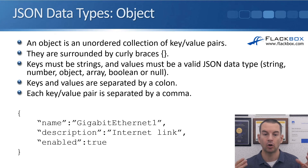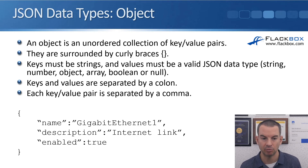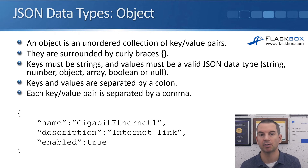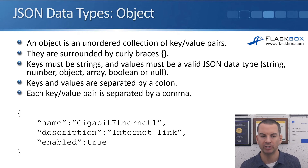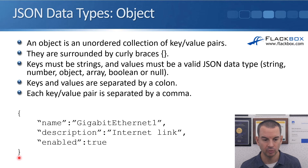An object is an unordered collection of key-value pairs which describe the thing — whatever the object is. When written in JSON format, it is surrounded by curly braces. The keys must be strings and the values must be a valid JSON data type: string, number, object, array, boolean, or null. Keys and values are separated by a colon, and each key-value pair is separated by a comma until the last one. You can see in the example we've got our JSON object opened and closed with curly brackets.